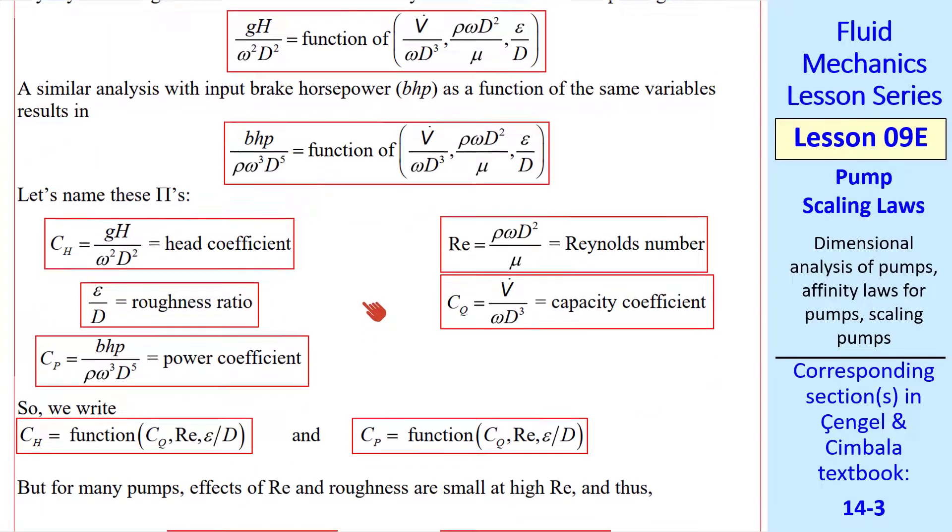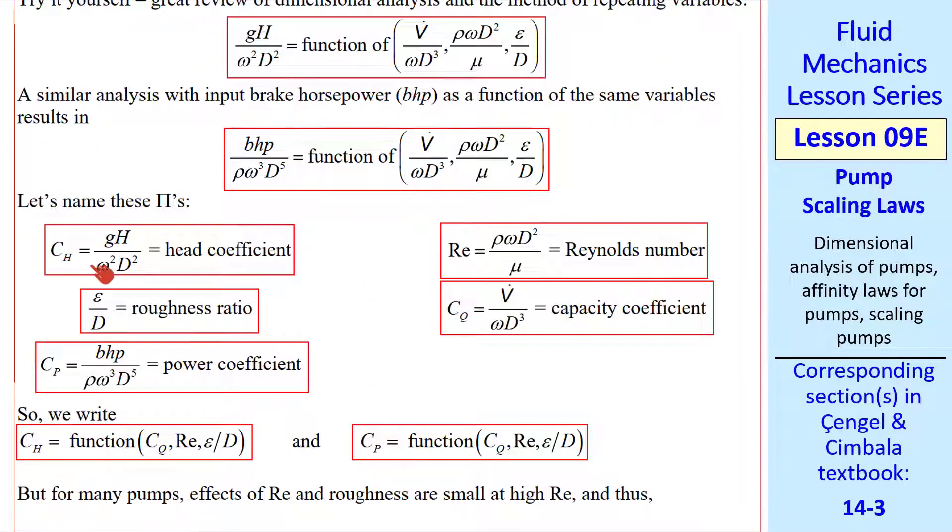The 3 independent pi's are the same, but the dependent one is now brake horsepower over rho omega cubed D to the fifth. In turbomachinery, we name these pi's. This first one is called the head coefficient, since it's a non-dimensional form of head. The second one is called the power coefficient, Cp, since it's a non-dimensional form of brake horsepower. This first independent variable is called capacity coefficient, which is a non-dimensional volume flow rate. We use Cq rather than Cv dot because in turbomachinery, Q is used instead of V dot typically as the volume flow rate. And this word capacity means volume flow rate in pump lingo. When a pump engineer talks about the capacity of a pump, he or she means the volume flow rate going through that pump.